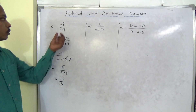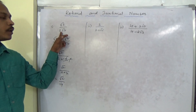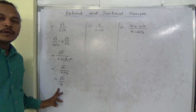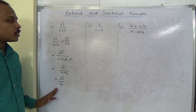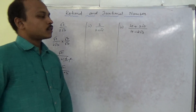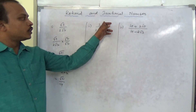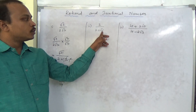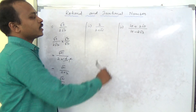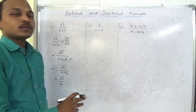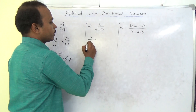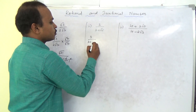In the given question the denominator was irrational, but finally we have got a rationalized denominator. So we have rationalized the denominator. Now see the second question: 3 by 2 plus √5. The rationalizing factor for 2 plus √5 is 2 minus √5.